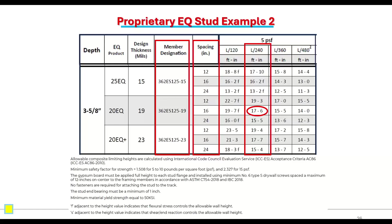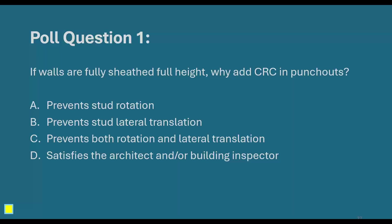Time for the first poll question. If walls are fully sheathed full height, why add CRC (cold rolled channel) in the punch-outs? Options are: A — prevent stud rotation; B — prevent stud lateral translation; C — prevent both rotation and lateral translation; D — satisfies the architect and/or building inspector. This is not a question about something already taught — it's to get your opinion before the answer is revealed.